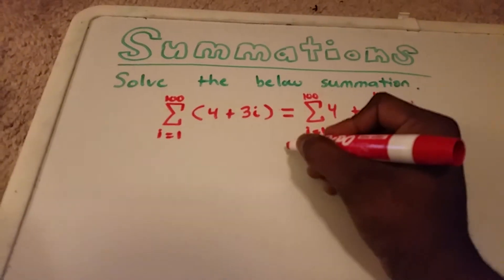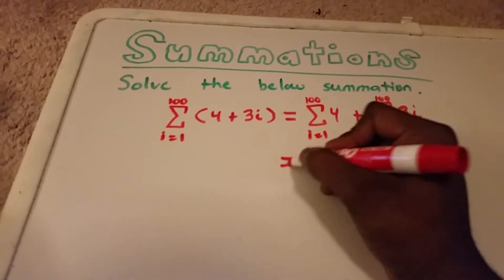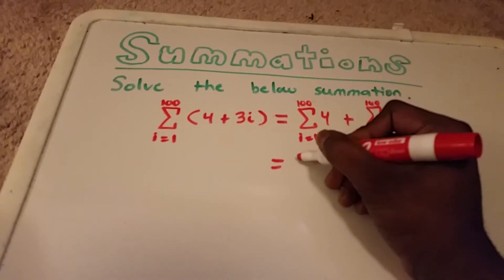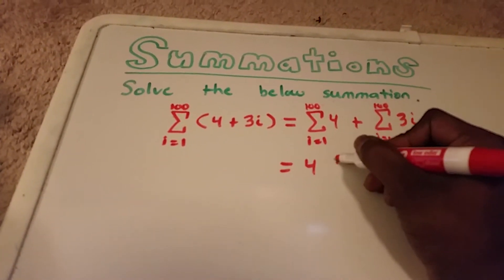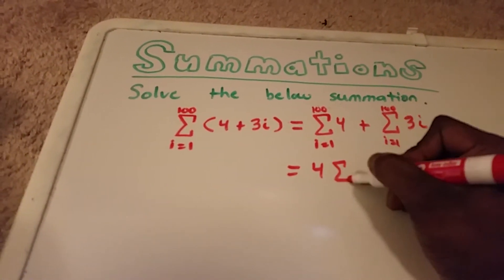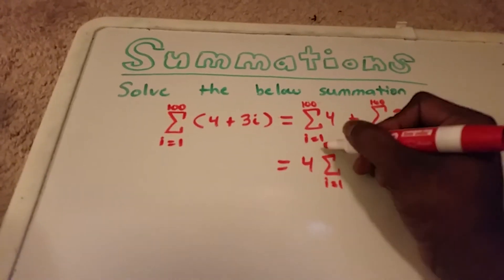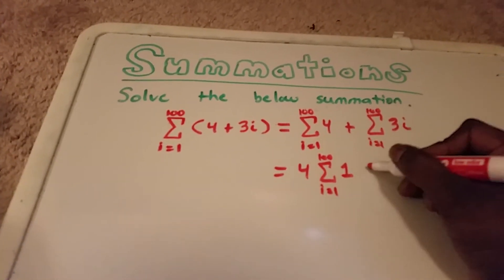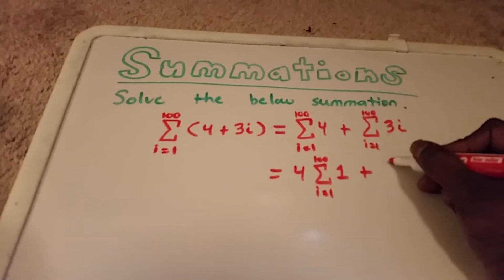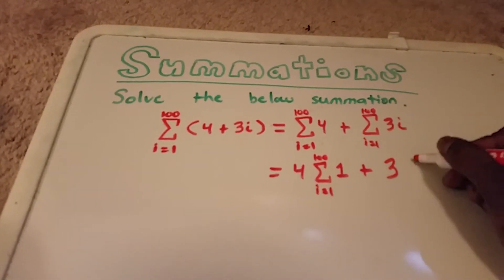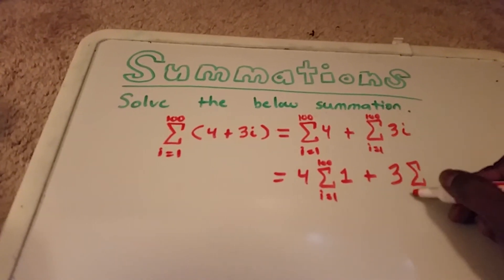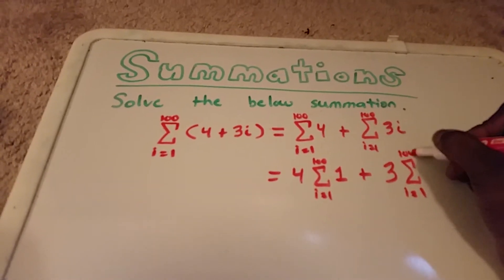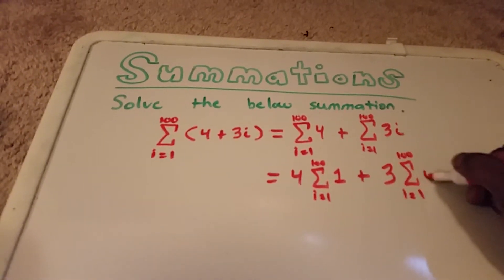Next, we're going to factor out our constants to get 4 times the summation from i equals 1 to 100 of 1, plus 3 times the summation from i equals 1 to 100 of i.